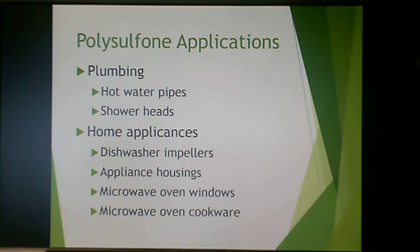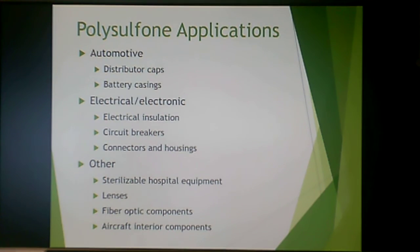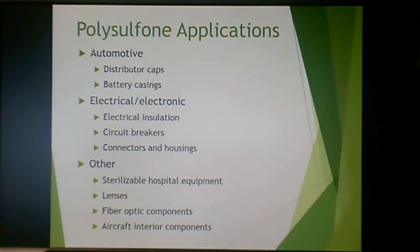Polysulfone is often used in plumbing parts such as hot water pipes and shower heads, dishwasher impellers, appliance housings, and microwave oven windows — because it's amorphous, it is transparent, so your microwave oven window is polysulfone rather than glass. They're also used for distributor caps, battery casings, electrical insulation, circuit breakers, connectors, and housings. They're used in sterilizable hospital equipment, lenses, and fiber optic components because they're amorphous and clear, as well as for aircraft interior components because they meet the FAA requirements for being self-extinguishing.